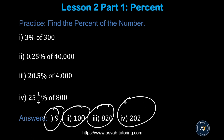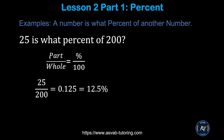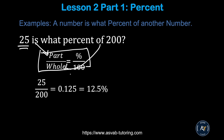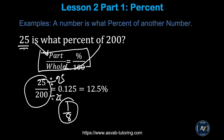Let's learn a formula that helps you solve most percent problems: part over whole equals percent over 100. Keep these keywords in mind: 'is' means part, 'of' means whole. For example: 25 is what percent of 200? Here, 200 is the whole and 25 is the part. So 25 over 200 — simplify by dividing both sides by 25 — gives 1 over 8, which equals 0.125. Move two decimal places to get 12.5 percent.